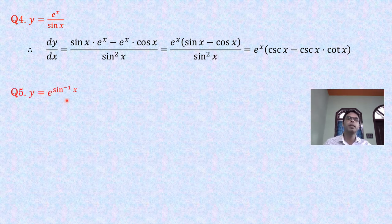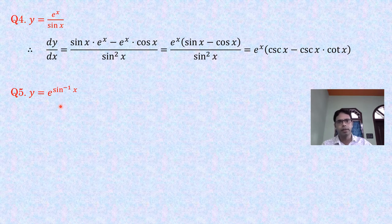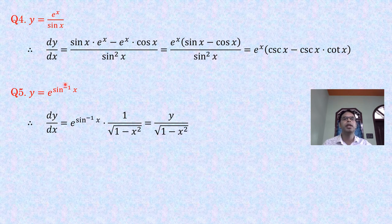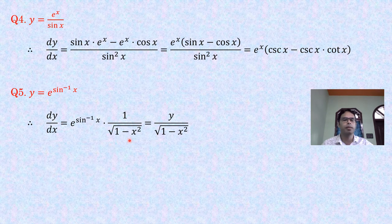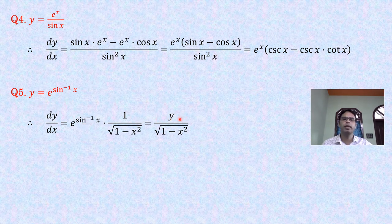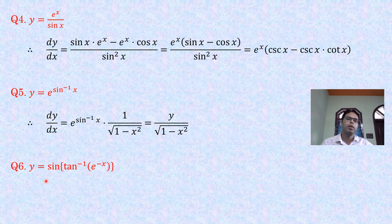Problem 5: y = e^(sin⁻¹ x). dy/dx = e^(sin⁻¹ x) · d/dx(sin⁻¹ x) = e^(sin⁻¹ x) · 1/√(1−x²). Since y = e^(sin⁻¹ x), this can also be written as y/√(1−x²).